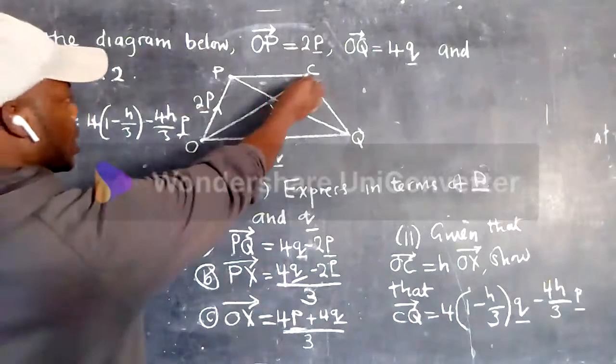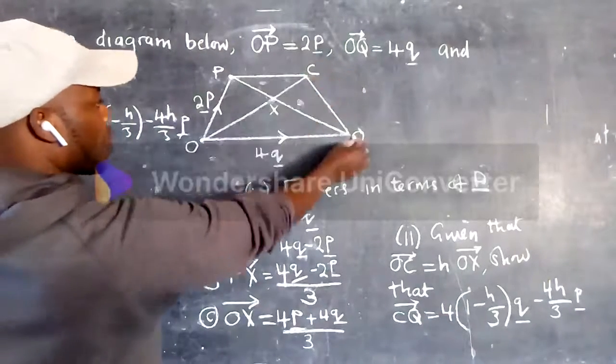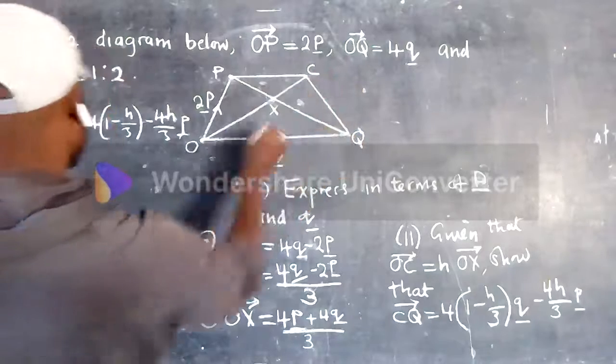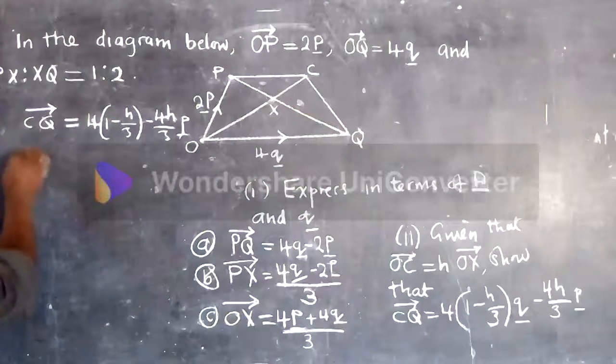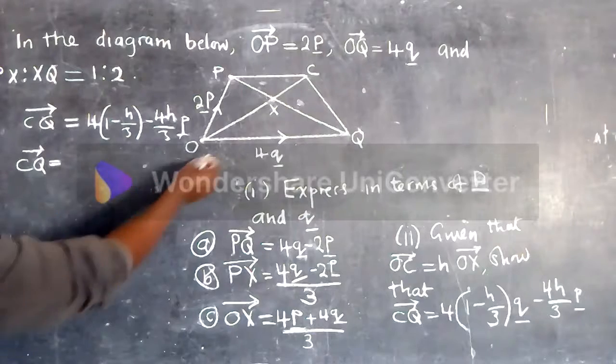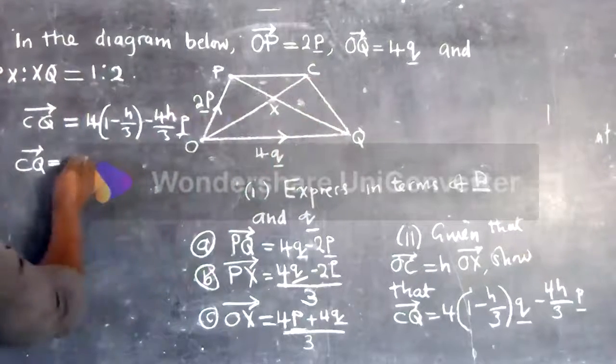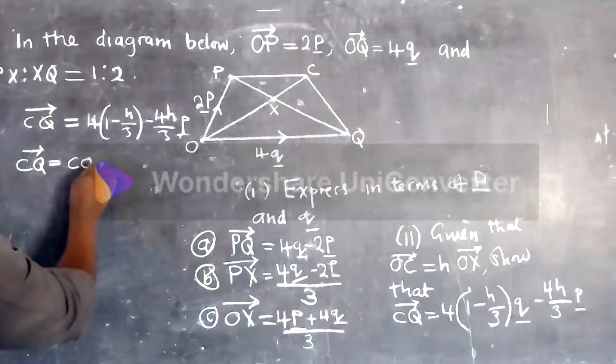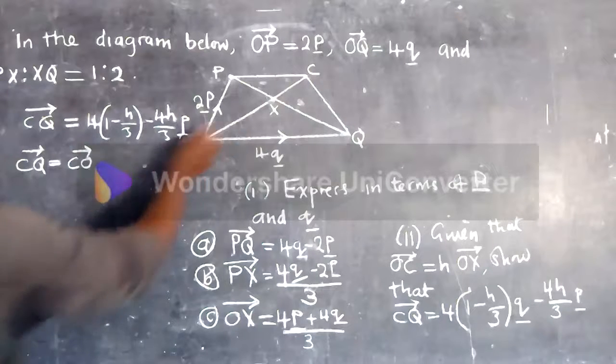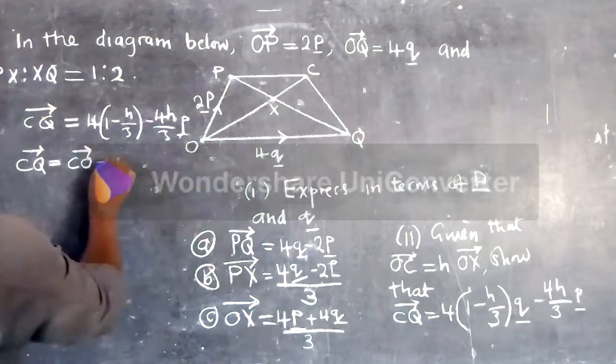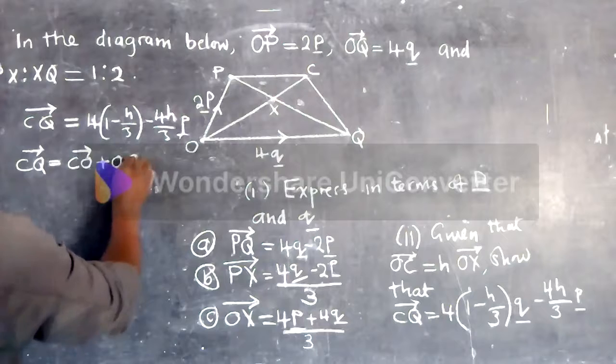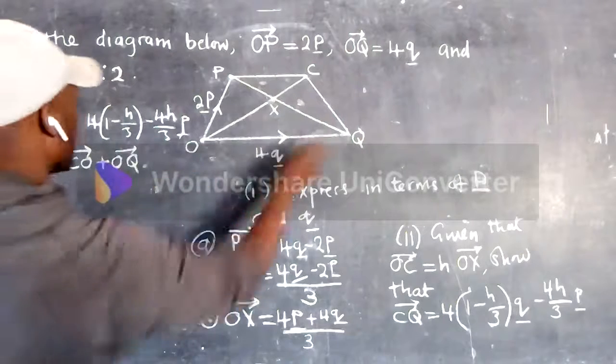So we need to show that this is equal to this. We are going to find CQ. Which direction are we going to go? CQ, we can move this way. CQ is CO plus OQ, vector OQ.